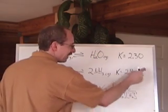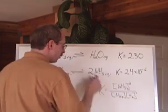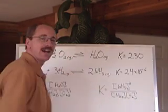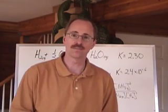When you have a K value that's less than one, that means that there are more reactants than products that are formed at equilibrium. That's straightforward.